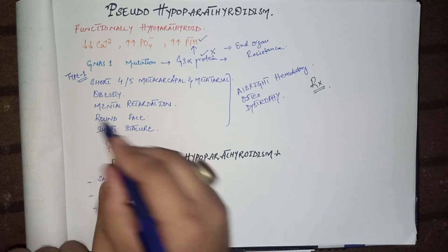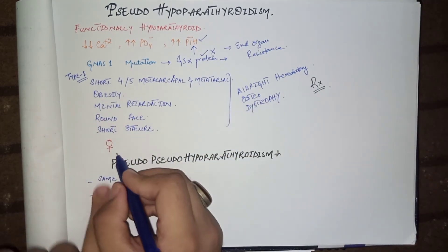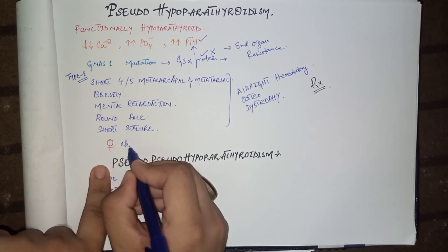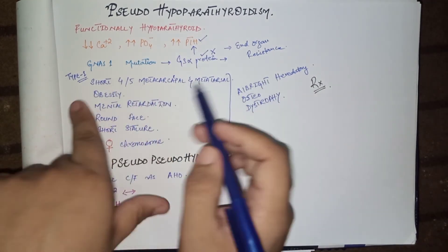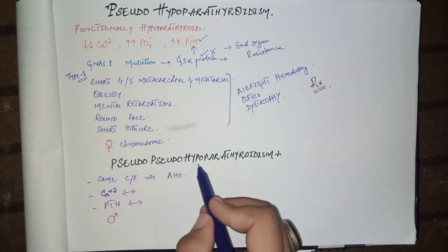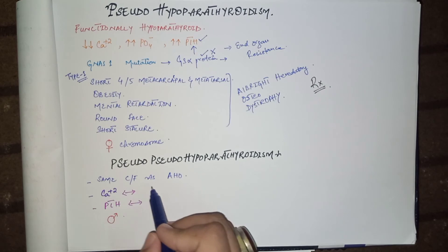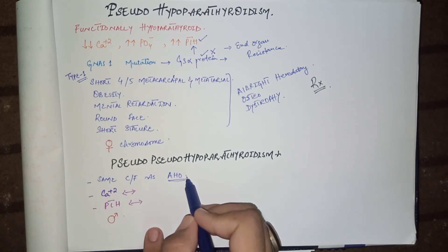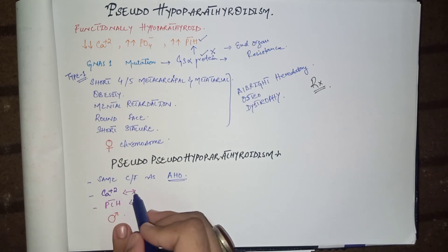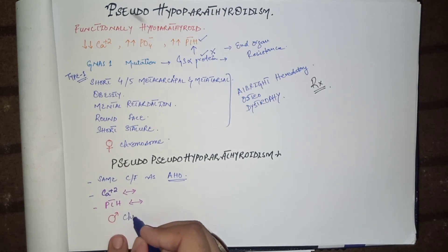Albright hereditary osteodystrophy is inherited from the maternal chromosome. In pseudo-pseudo hypoparathyroidism, the clinical presentation is the same as in Albright hereditary osteodystrophy, but the calcium levels are normal and the parathyroid hormone levels are also normal. It is inherited from the paternal chromosome.